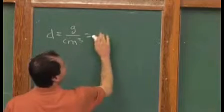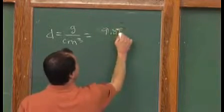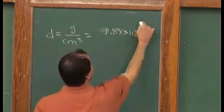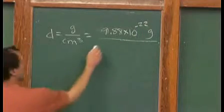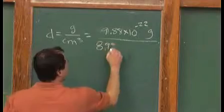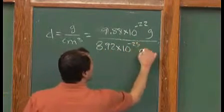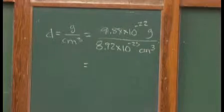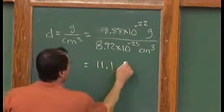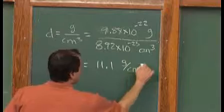So 9.88 times 10 to the negative 22nd grams divided by 8.92 times 10 to the negative 23rd centimeters cubed. And I calculate this to be a little bit over 11, 11.1 grams per cubic centimeter.